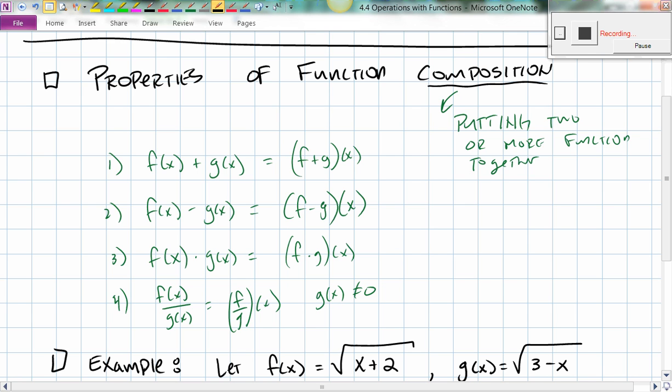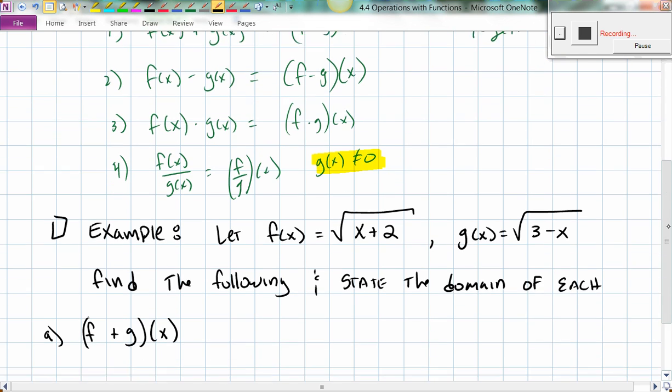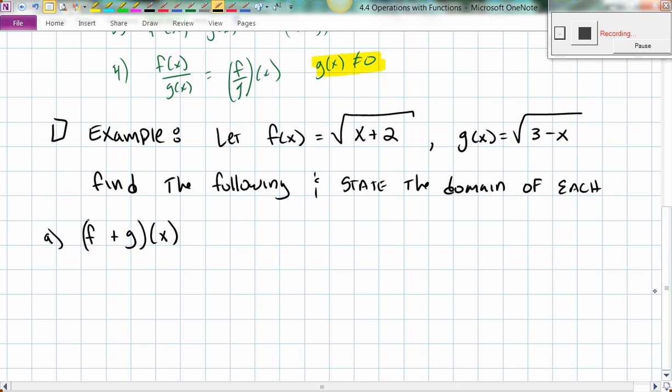They don't make a whole lot of sense until you start actually doing them. So I want to point out number four, though, because f of x divided by g of x is f divided by g of x, provided that g of x is not equal to 0 because, of course, you can never divide by 0 in mathematics. People get really upset with you. Okay, so here's an example, and hopefully this will make some sense to you.